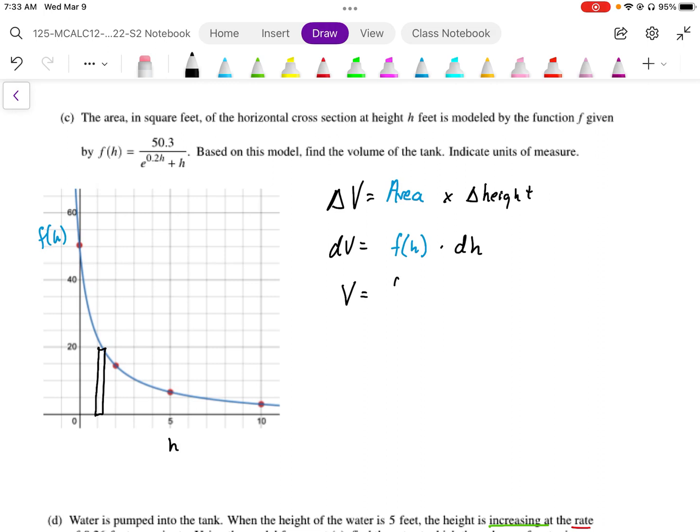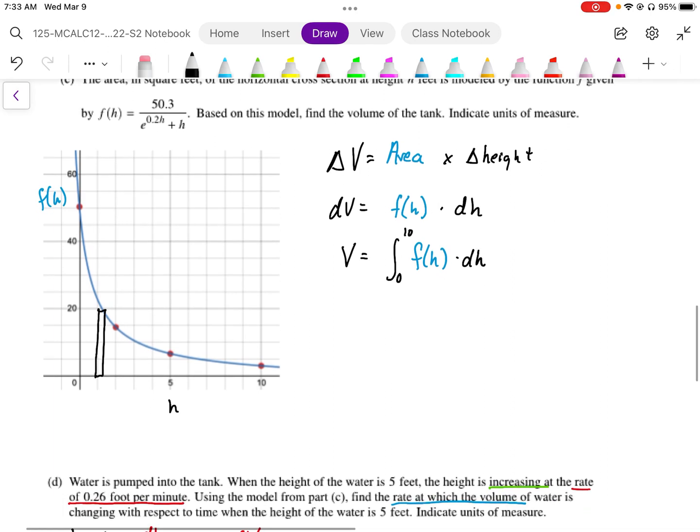And if I want to find the net change in volume, it's going to be the integral from 0 to 10 of f(h) times dh. So this area is going to calculate the volume of this function.